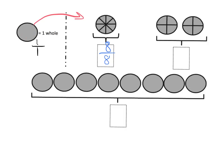Moving over here, we can see we have two circles, so we now have two wholes. Each whole has been cut into four pieces, so our denominator is four. How many fourths do we have? We count: one, two, three, four, five, six, seven, eight — we have eight fourths, so our numerator is eight.